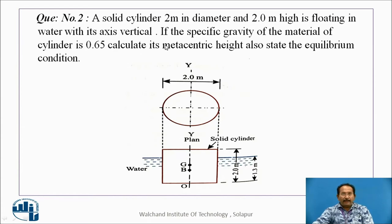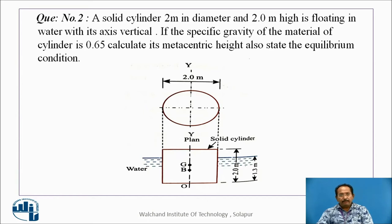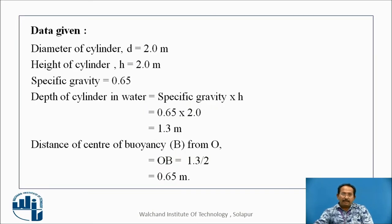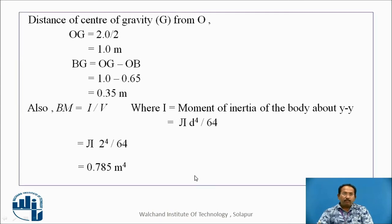A solid cylinder 2 meters in diameter and 2 meters high is floating in water with its axis vertical. The specific gravity of the material is 0.65. Calculate its metacentric height and equilibrium condition. The depth of the cylinder in water equals specific gravity multiplied by height, giving 1.3 meters. The distance of the center of buoyancy B from O is 1.3 divided by 2, which is 0.65 meters. The distance of the center of gravity from O is 2 divided by 2, which is 1 meter. BG equals OG minus OB, giving 0.35.